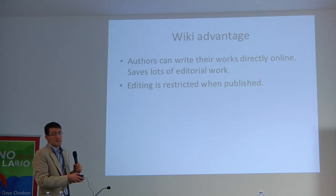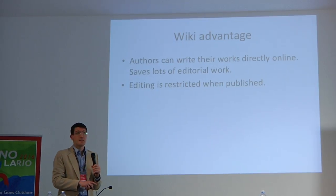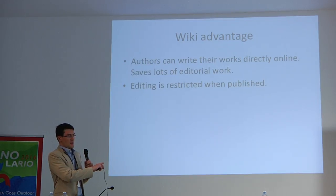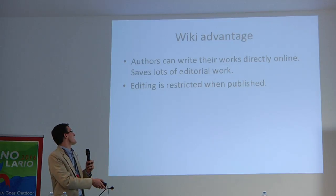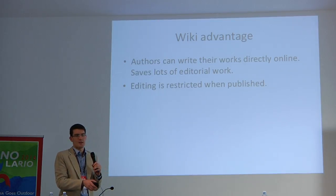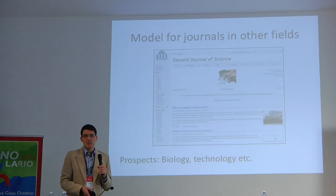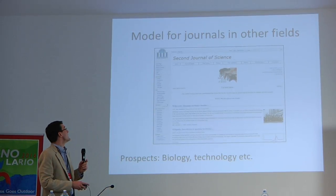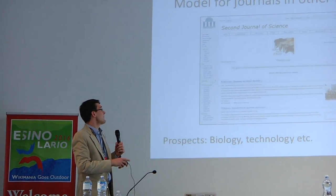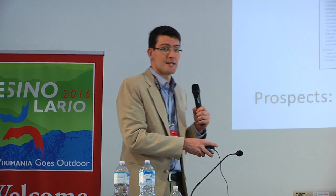A major advantage of the structure of the journal is that authors can write their works directly online, and this saves a lot of editorial work. After a submission is accepted and published, further editing is restricted, because you may then need a new peer review. This journal is also meant to serve as a model for journals in other fields. A second journal of science was created earlier this year, and hopefully this model will be expanded to fields such as biology and technology as well.